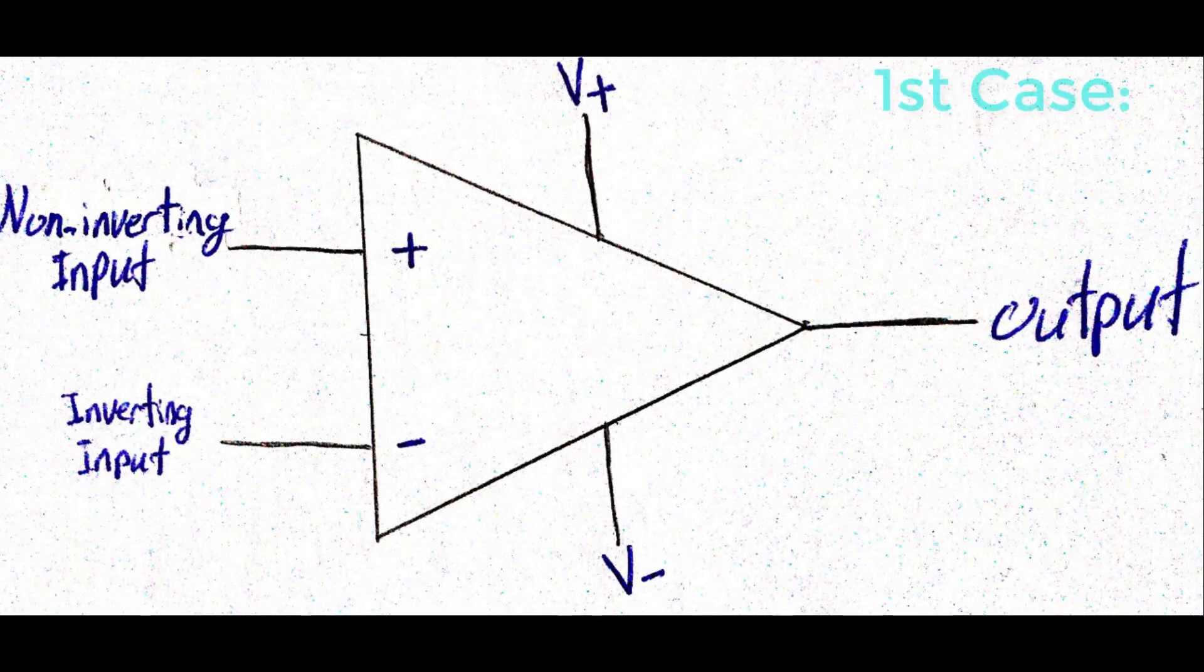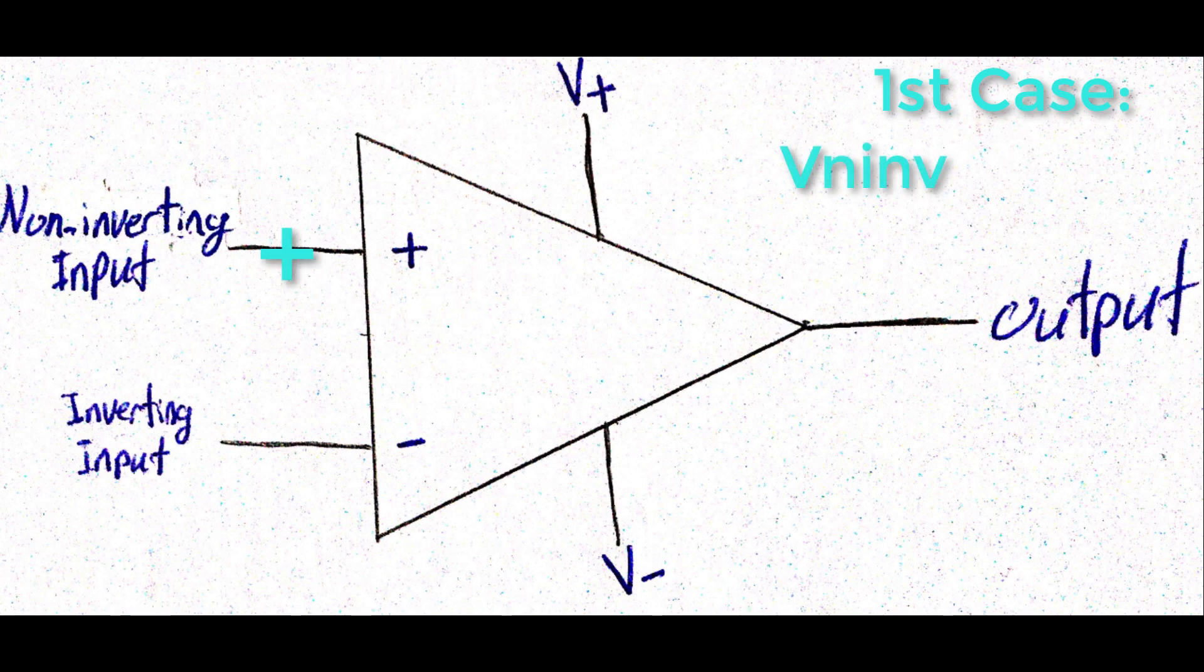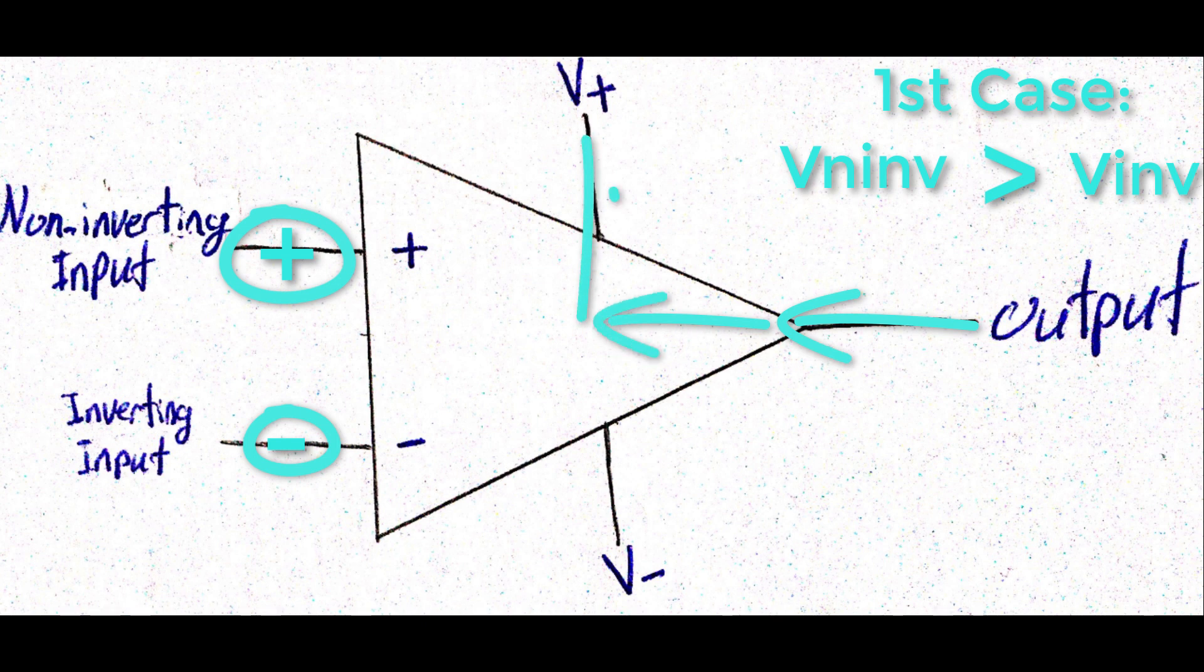In the first case, the non-inverting input voltage is higher than the inverting input voltage. This will lead the output voltage to be pulled to V+.